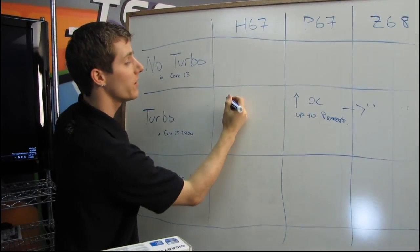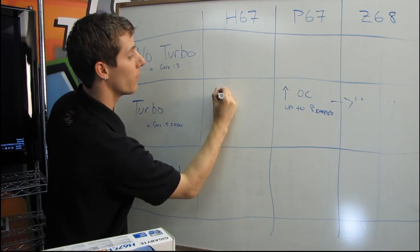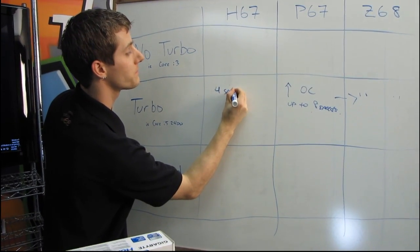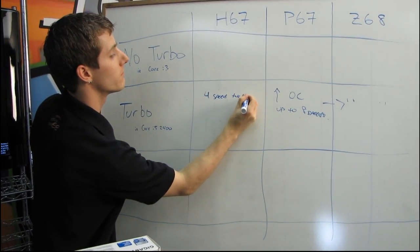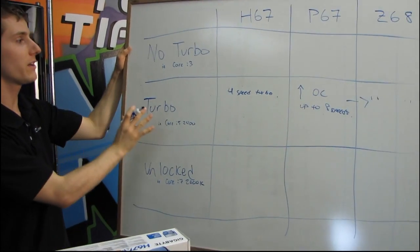That's it, no additional overclocking. So four speed bins turbo—that is a regular turbo processor.